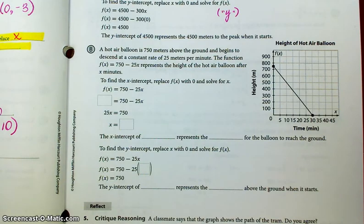B, we have a similar situation. A hot air balloon is 750 meters above the ground and begins to descend at a constant rate of 25 meters per minute. The function f(x) = 750 - 25x represents the height of the hot air balloon after x minutes. So to find the x-intercept, remember, we are replacing y with 0, or in this case, they call it f(x). And then we're going to solve for x. So let's do that.